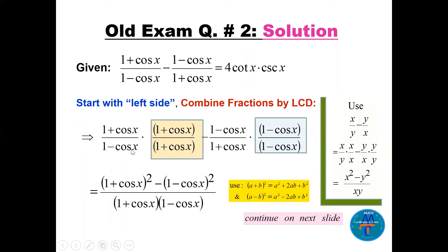I multiply up and down by (1 + cos(x)) in the first fraction and by (1 - cos(x)) in the second, giving a common denominator of (1 + cos(x))(1 - cos(x)). In the numerator I have (1 + cos(x))² minus (1 - cos(x))². I expand using (a+b)² = a² + 2ab + b² and (a-b)² = a² - 2ab + b².